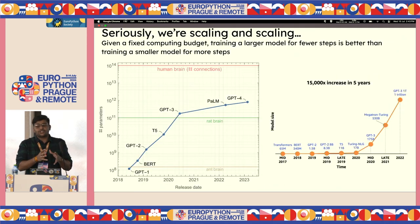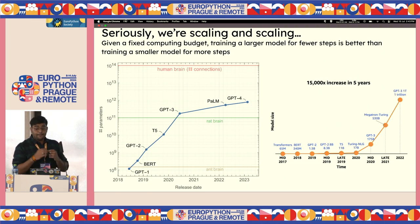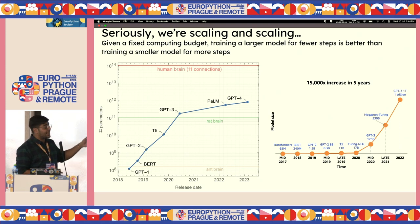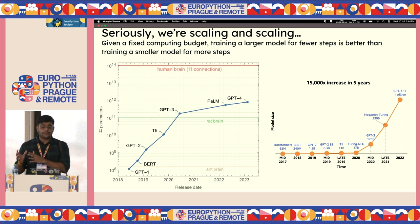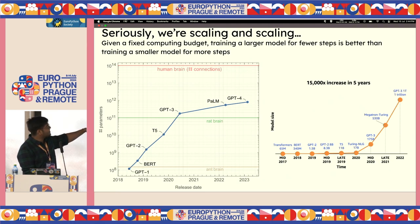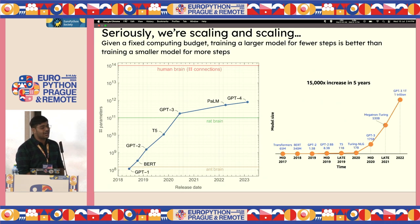The motivation for mixture of experts is this: given a fixed computing budget, training a larger model for fewer steps is empirically shown to be higher-performing than training a smaller model for more steps. This seems to contradict traditional understanding, where you add more data and fine-tune for a better model. But historically with LLMs, we've been scaling to bigger models — GPT-4 is rumored to be a mixture of experts of 8 times 220 billion parameters, like a trillion-parameter model, though we'll see why trillion parameters is not actually correct. There's been a 15,000x increase in parameters over five years.